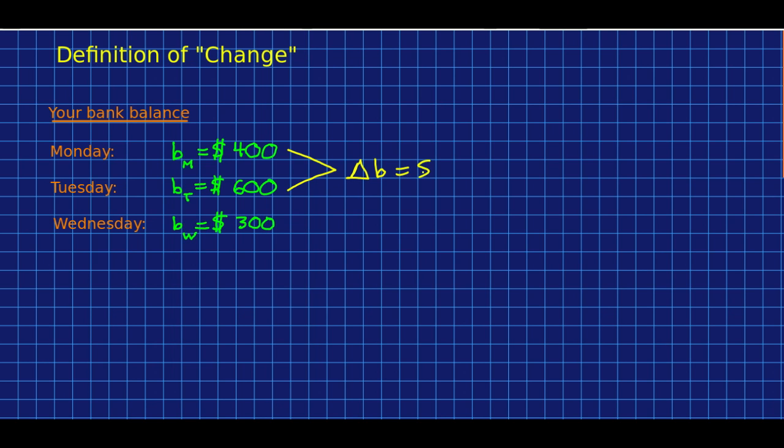Well, from Tuesday to Wednesday, it went from $600 to $300. Well, you could say that your delta B was $300, but I think we want to distinguish between your bank balance going up and down. I certainly prefer to be able to distinguish between my bank balance going up and down. So it makes more sense to say that this one is negative $300.